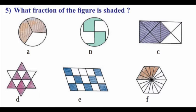What fraction of the figure is shaded? Observe this figure. 3 parts, 2 are shaded. So 2 by 3. Second one, 4 equal parts, 2 are shaded. So 2 by 4.